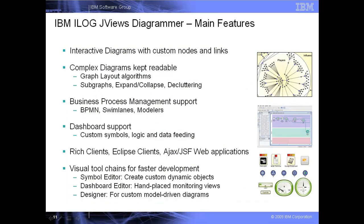Now let's drill down and talk a little bit about the specific services that a Java developer finds in JVUES Diagrammer. The product offers all the features needed to make interactive and completely customized diagrams or dashboard displays. The nodes and links can be quite sophisticated graphics objects that represent real-world business objects. They can be connected to the underlying models of data and receive updates when the data changes. To make the diagrams readable, there is a complete set of graph layout algorithms and placement techniques, such as swim lanes and subgraphs, label decluttering, and so on.